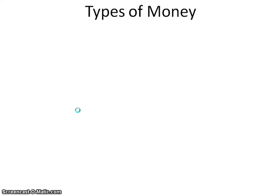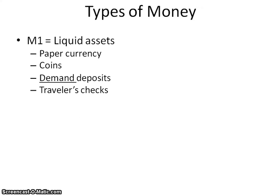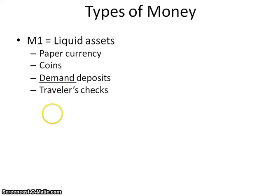When we're talking about the types of money, there are two types. You have M1, which is more liquid assets, meaning it's something that can be used quickly in order to pay for something. You have dollar bills and coins. The big buzzword here would be your demand deposits, and those would be your checking accounts. And then you also have traveler's checks.